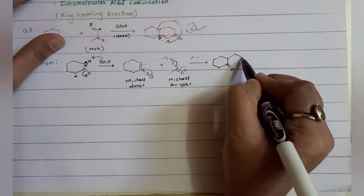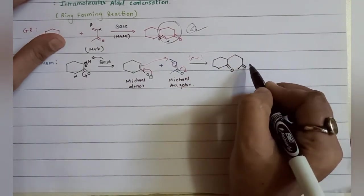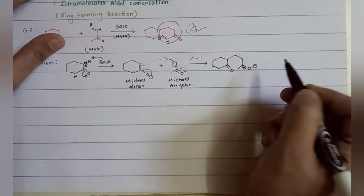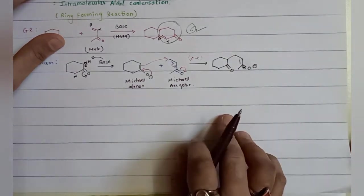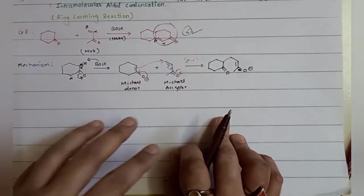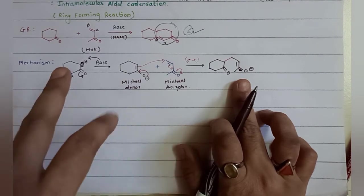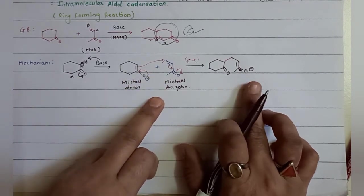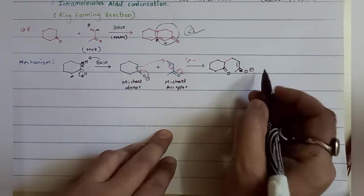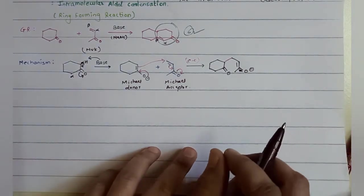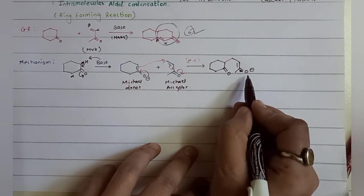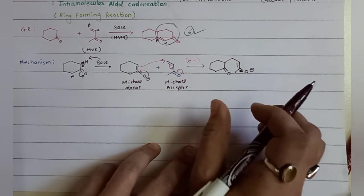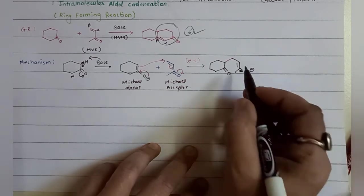An oxyanion is generated and migrates here, giving you this product. So first you get formation of enolate, second conjugate addition, and third protonation of your new enolate. This new enolate undergoes protonation, and finally you get a double bond. Once you get this product, the base attacks this group again across the double bond.